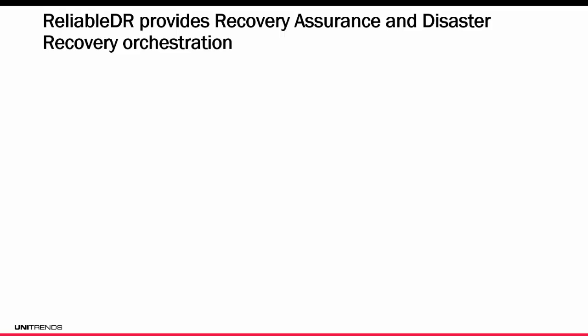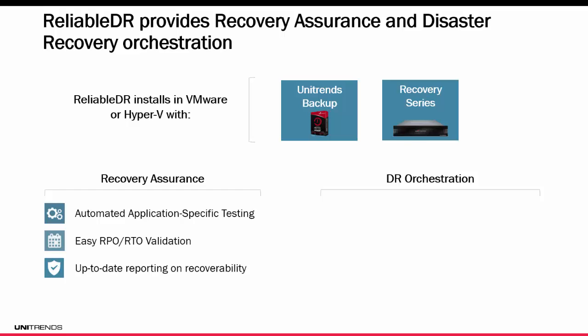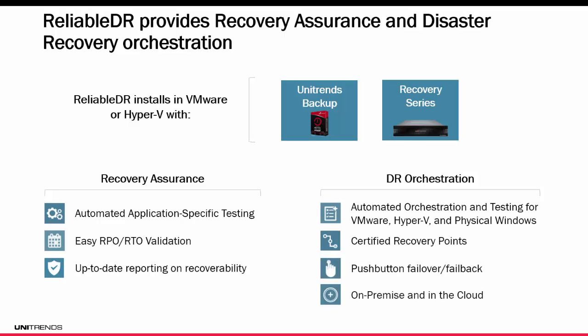Unitrends ReliableDR provides recovery assurance and disaster recovery orchestration for your environment. You can use this with Unitrends Backup or the Recovery Series solution, and it installs in your VMware or Hyper-V environment. The recovery assurance provides automated application-specific testing with easy RTO and RPO validation that produces up-to-date reporting on your recoverability. The DR orchestration part of ReliableDR provides automated orchestration and testing for VMware, Hyper-V, and physical Windows servers to be recovered within VMware or Hyper-V. It offers certified recovery points tested down to the application level, plus push-button failover and failback either on-premises, in a private cloud, or utilizing the Unitrends hybrid cloud solution. We'll go into more detail about this in Module 4 as well.